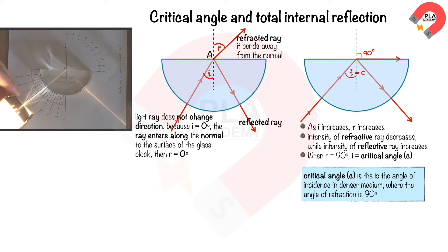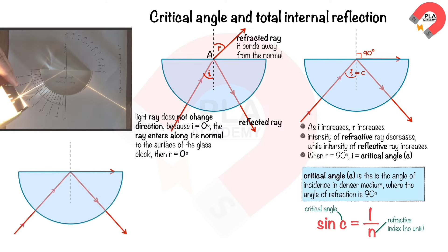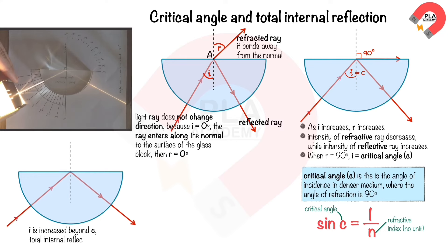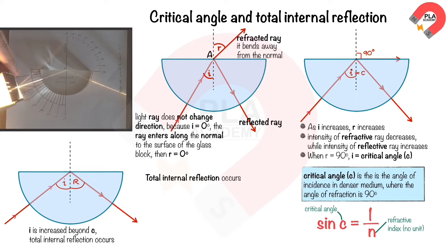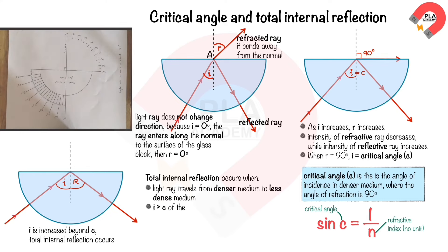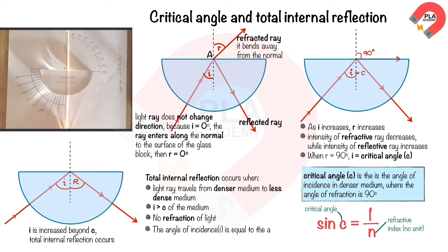We can calculate the critical angle using the corresponding equation. If the angle of incidence is increased beyond the critical angle, total internal reflection occurs. Total internal reflection occurs when the light ray travels from a denser medium to a less dense medium, the angle of incidence is greater than the critical angle, there is no refraction of light, and the angle of incidence equals the angle of reflection.